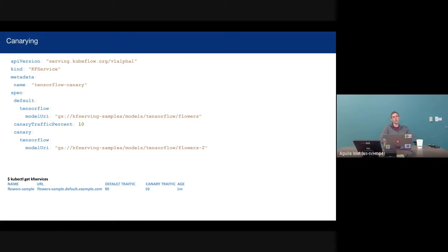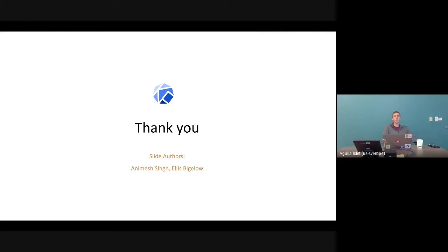You can see we have 10% of traffic going to flowers-v2, and 90% going to flowers. There's an example of our kubectl get command — we give you the URL you're running on as well as the traffic split. That's where we're at right now. We have a pretty big vision for what we want the product to be. Right now we're just trying to nail down the core use cases — making sure auto-scaling is great, the GPU experience is great, and the framework experience is great. There are additional things we want to attack like GPU sharing, payload logging, and explainability.